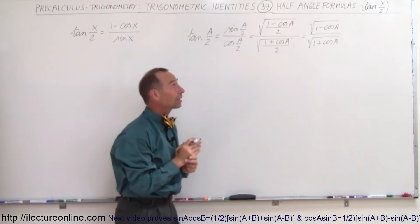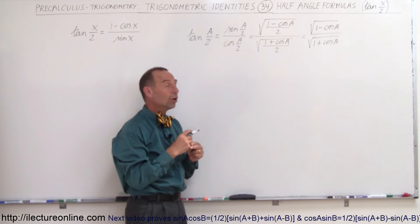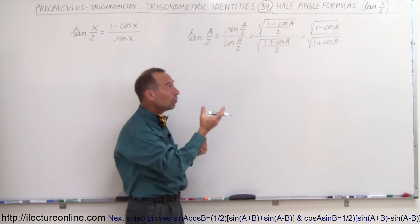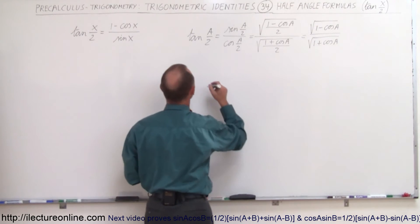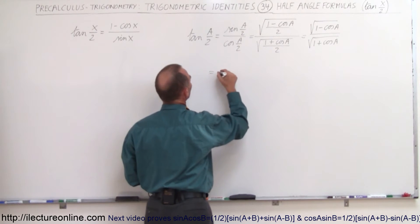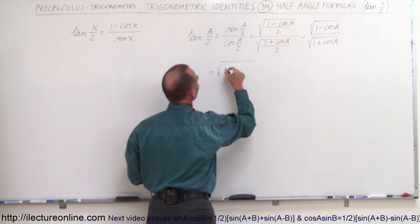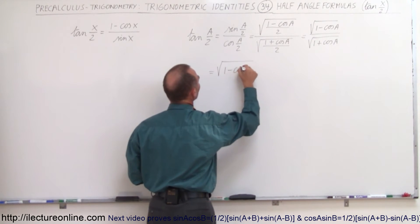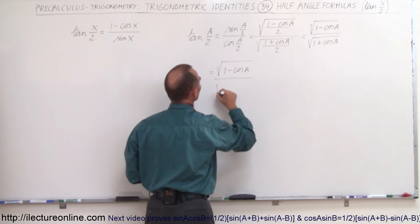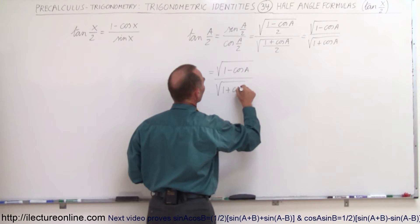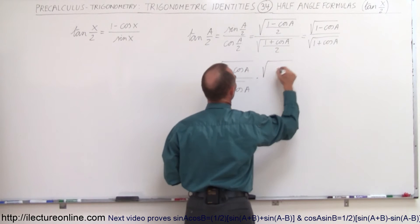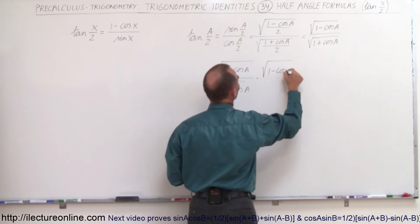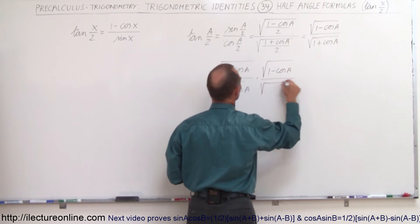This is where the interesting mathematical trick comes from. We're going to multiply the numerator and denominator by the conjugate of the denominator, and see what happens. So this is equal to the square root of (1 minus cos(a)) over the square root of (1 plus cos(a)), multiplied by the square root of (1 minus cos(a)) over the square root of (1 minus cos(a)).